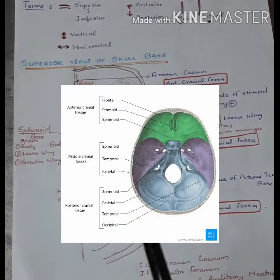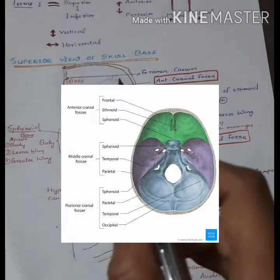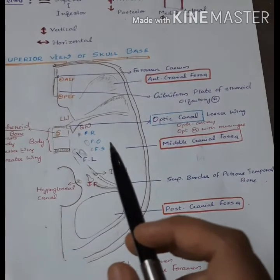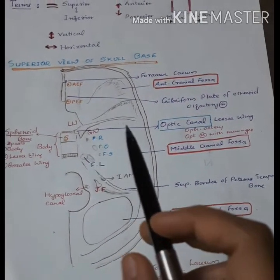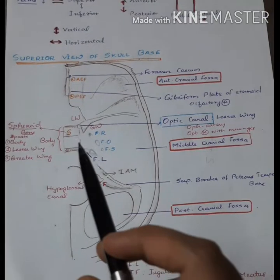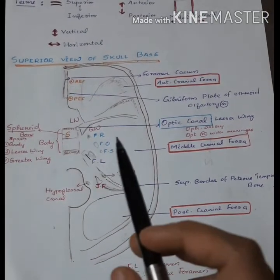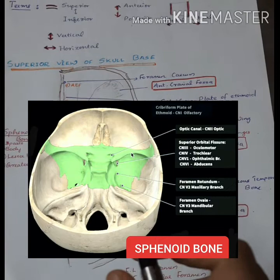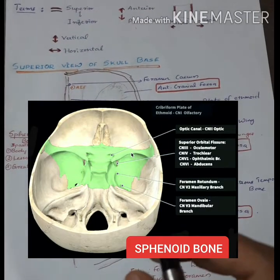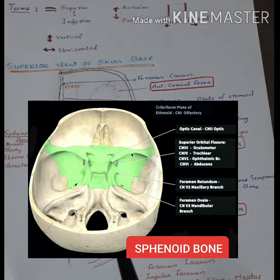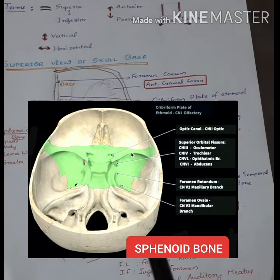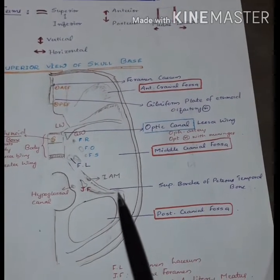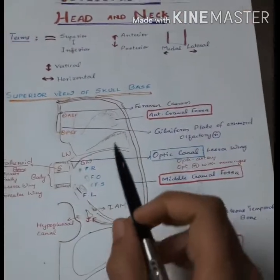The anterior and the middle cranial fossa is divided by the greater wing of the sphenoid bone. The middle cranial fossa and the posterior cranial fossa is divided by the superior border of the petrous temporal bone.